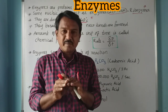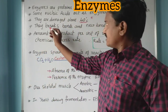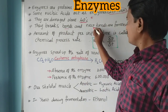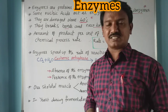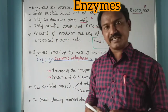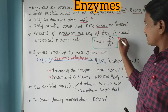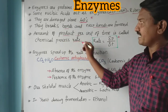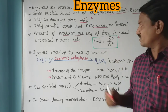Enzymes break chemical bonds present in a substance, and new bonds are formed in the form of products. Enzymes are involved in increasing the rate of chemical reactions. The rate of a chemical reaction is defined as the amount of product formed per unit of time.